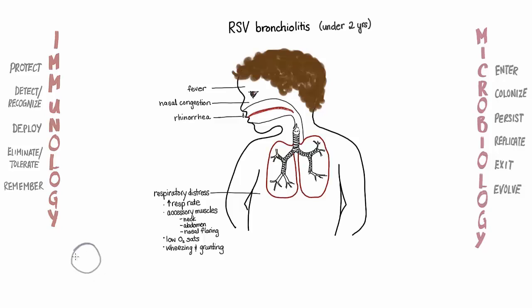RSV is an enveloped RNA virus with two large glycoproteins, F and G, that are important for immunity and pathogenesis. The F protein is involved in fusion of the virus and host cell plasma membranes, forming the syncytia that can be seen in vitro with specific cell cultures. This explains where RSV got its name.